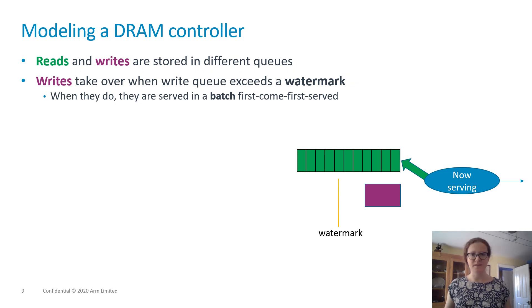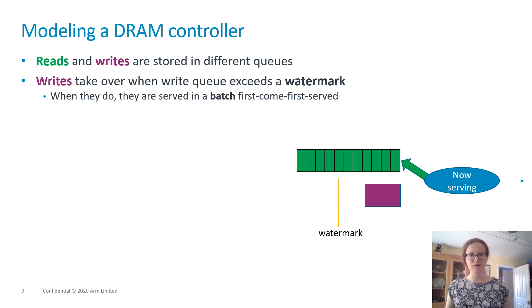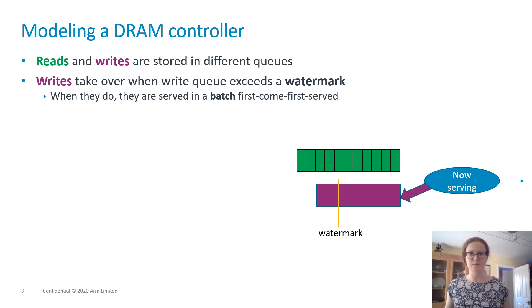The DRAM controller is the entity that arbitrates access to DRAM chips. The controller maintains two queues: one for read requests and one for write requests. Writes are considered non-critical from a timing perspective, hence reads are given priority. In fact, writes are only served if there are too many in the queue. This is called the watermark approach: the controller only switches to the write queue when it is above the watermark, and when it does so, it serves a batch of writes before returning to reads.